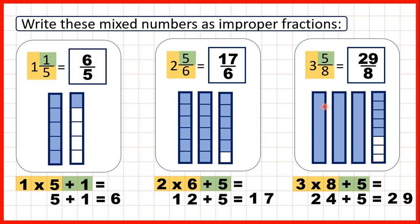And again, we can see why this works, because in 3 and 5 eighths, we have 3 wholes. But if we split those 3 wholes into 8ths, that gives us 8, 16, 24 eighths. And if we add the 5 eighths that was in our question, that gives us 29 eighths altogether. So that's why we multiplied the whole number by the denominator, and then add the numerator.